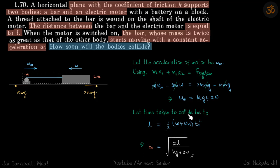Because W and WM are constants, L is equal to half a total into T not square, which gives time of collision to be this. Thank you for watching.